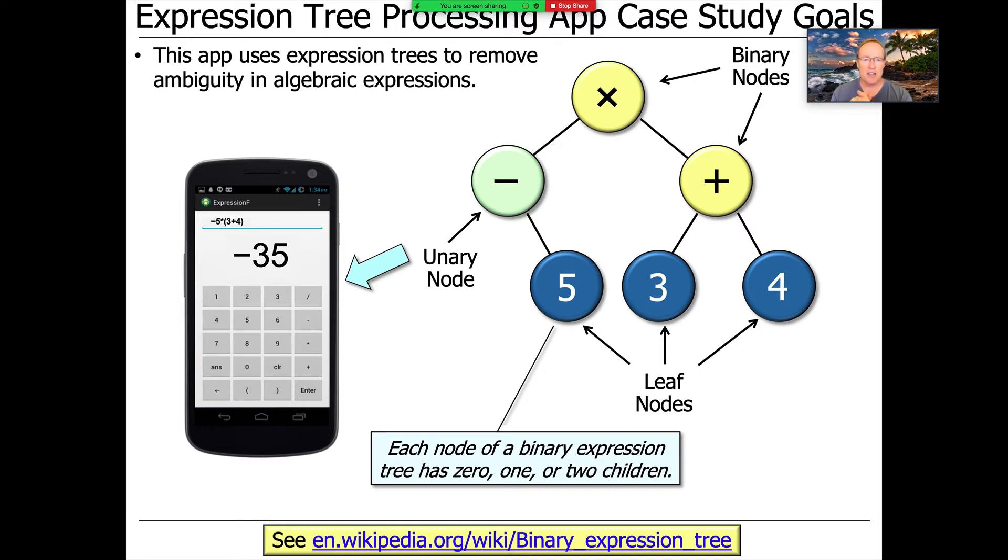So for example, here's an expression tree that corresponds to minus five times the quantity three plus four. And we'll talk more about traversing this tree and evaluating it shortly. But if you look at this tree and you know binary trees and you know different traversal orders like post order and in order and so on, then you can very quickly realize that the yield of this tree is three plus four,